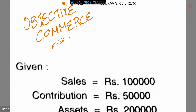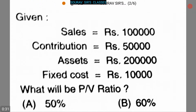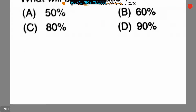Today our topic is objective commerce and here is our first question. It is given that sales is Rs. 1 lakh, contribution is Rs. 50,000, assets is Rs. 2 lakh, and fixed cost is Rs. 10,000. We have to find out the value of PV ratio. Four options are given: Option A is 50%, Option B is 60%, Option C is 80%, and Option D is 90%. Now let's start.